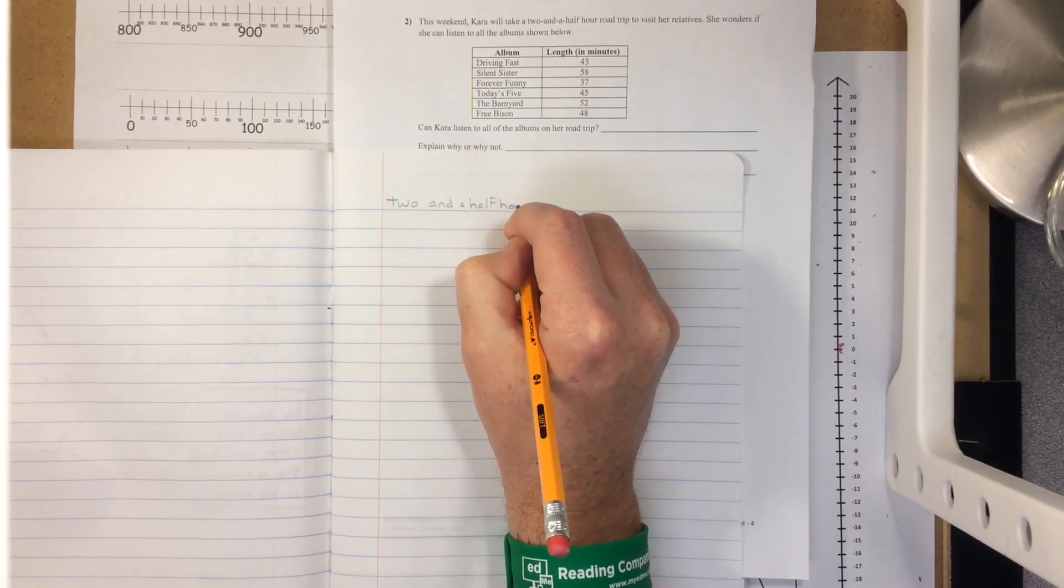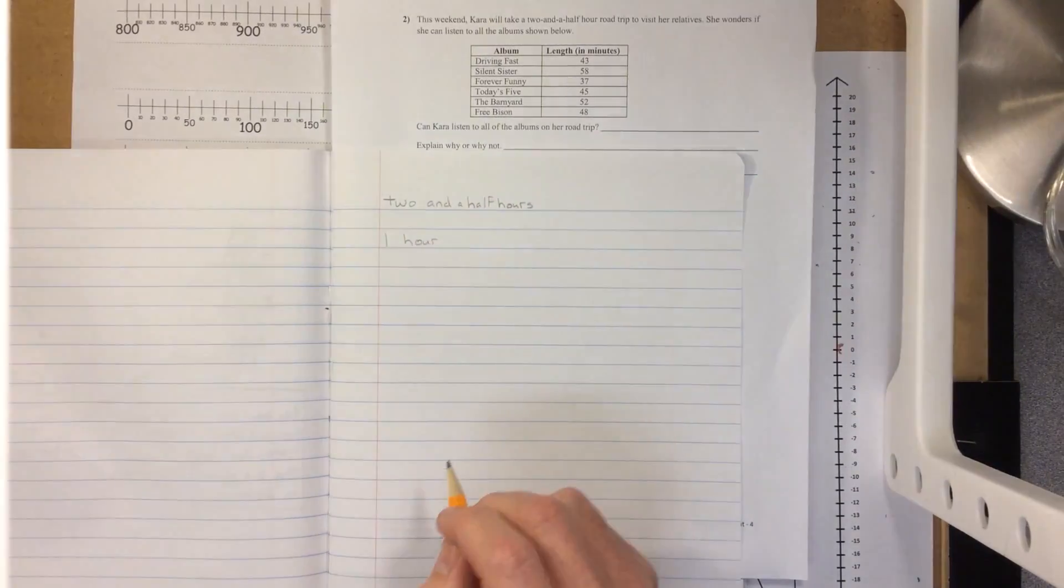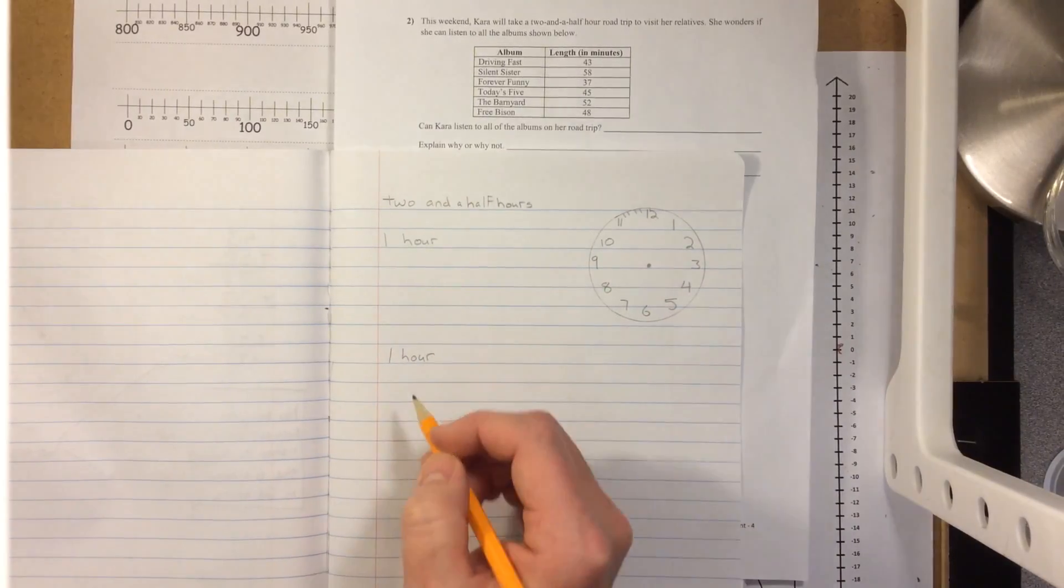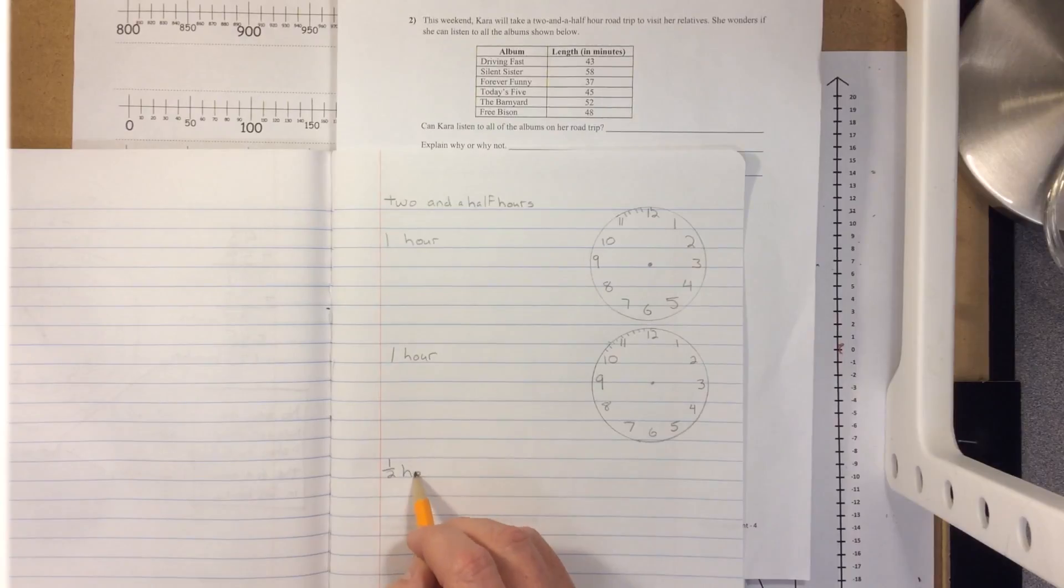We have two and a half hours, so we need to look at two hours and a half hour. We could first compare Silent Sister with one hour. So we have one hour, one hour, and one half hour.